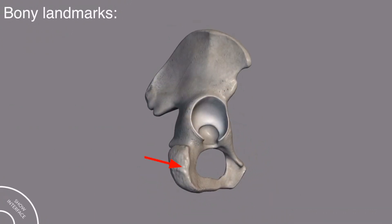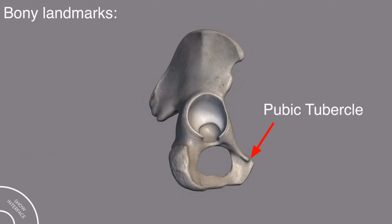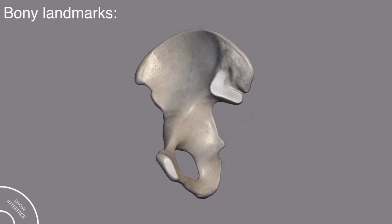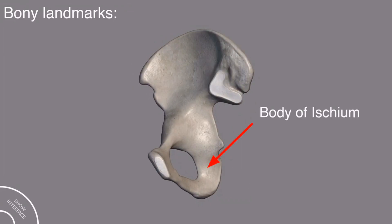This tuberosity is called the ischial tuberosity. This is the pubic tubercle and this is the body of the pubis. Do not confuse the body of the pubis, which is present on this side, with the body of the ischium, which is present on the other side.